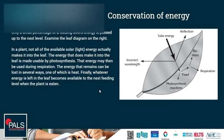Conservation of energy. Only a small percentage of a feeding level's energy is passed up to the next level. In a plant, not all the available solar energy actually makes it into the leaf. The energy that does make it into the leaf is made usable by photosynthesis. That energy may then be used during respiration by the plant. Or the energy that remains can be lost in several ways, one of which is heat. Whatever energy is left in the leaf becomes available to the next feeding level when the plant is eaten.